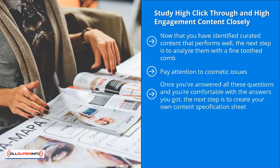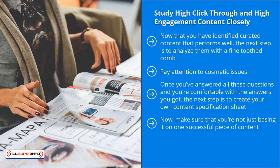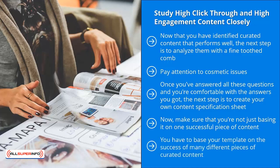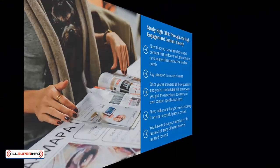Once you've answered all these questions and you're comfortable with the answers you got, the next step is to create your own content specification sheet. This is going to be your template. Make sure that you're not just basing it on one successful piece of content — that third-party content might be a fluke. The company behind it might just have gotten lucky and that piece of content went viral. You have to base your template on the success of many different pieces of curated content. This way, you can be more confident that even if you barely comply with all the specifications, you would at least get some decent and positive results.